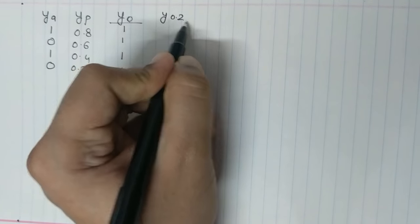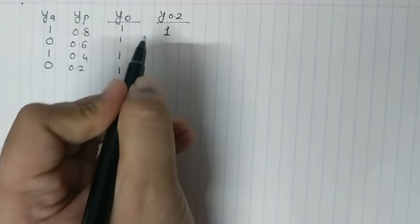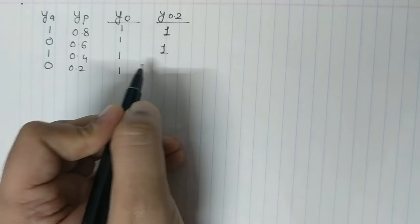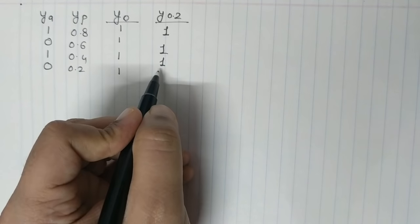Similarly at threshold 0.2, my 0.8 probability score will be classified as 1, 0.6 would be 1, 0.4 would be 1, and I've kept a threshold of greater than equal to, so even 0.2 would be classified as 1.